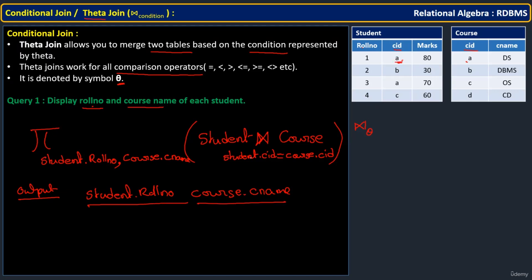Looking at the output: where course ID 'a' matches, roll number 1 gets course name DS — student one took Data Structures. Where 'b' matches, student two gets DBMS. Where 'a' appears again, student three took DS. And where course ID is 'c', student four took Operating Systems. This is the output from the theta join statement.